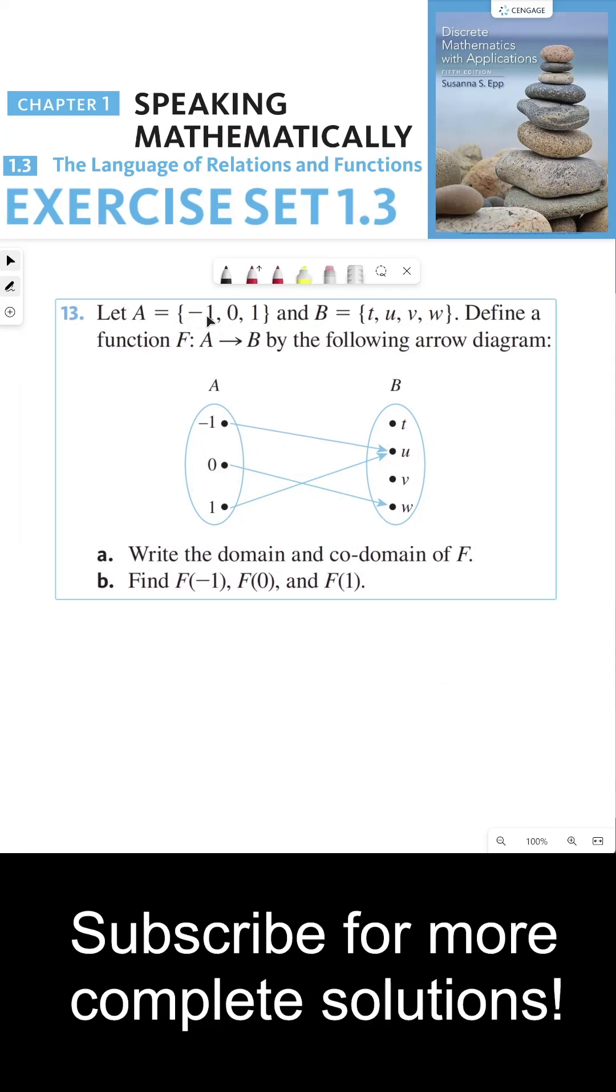It says, let A be the set containing negative one, zero, one. B is the set containing T, U, V, and W. Define a function F from A to B by the following arrow diagram.